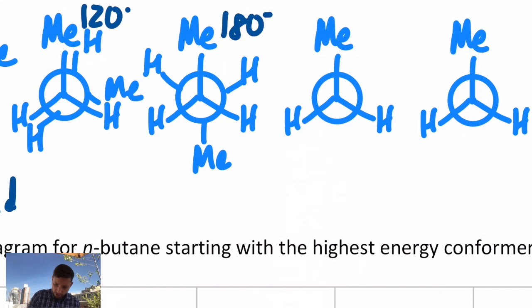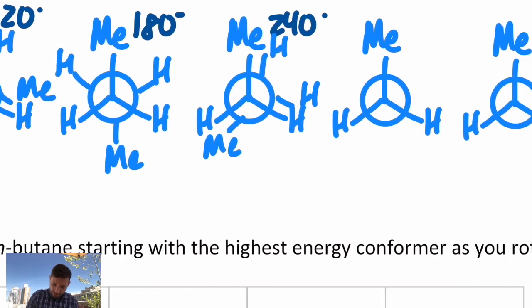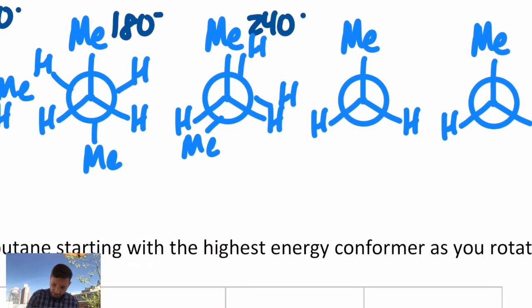Rotate 60 degrees more. I'll call it 240. We're back to a different eclipsed conformation. This time the methyl is in the lower left. The other spots have hydrogens. One more time. We'll call this 300. Now I'm back to a staggered conformer. Methyl in the upper left. Other two spots have Hs.